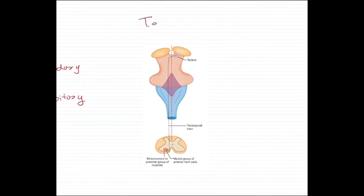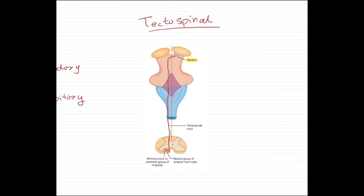The fourth and final extrapyramidal tract is the tectospinal tract, which originates in the tectum — an area in the midbrain in the cerebral peduncle. After originating in the tectum, the fibers cross over to the other side immediately, then move down. They terminate on the medial group of anterior horn cells, supplying the proximal group of muscles. They cross over to the tegmentum and form the anterior white column of the spinal cord.